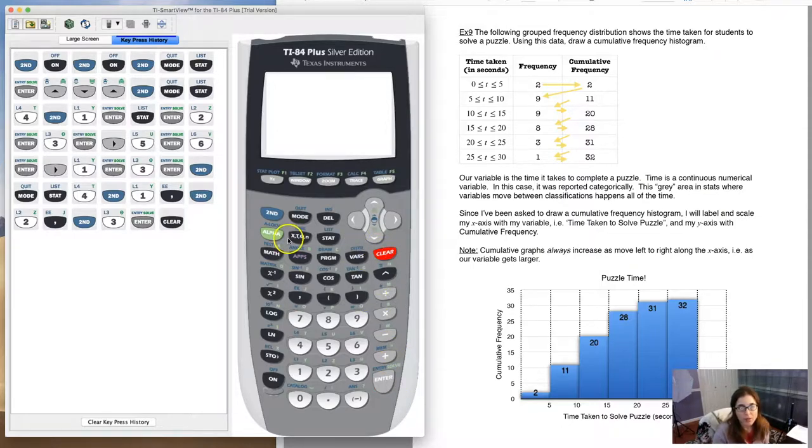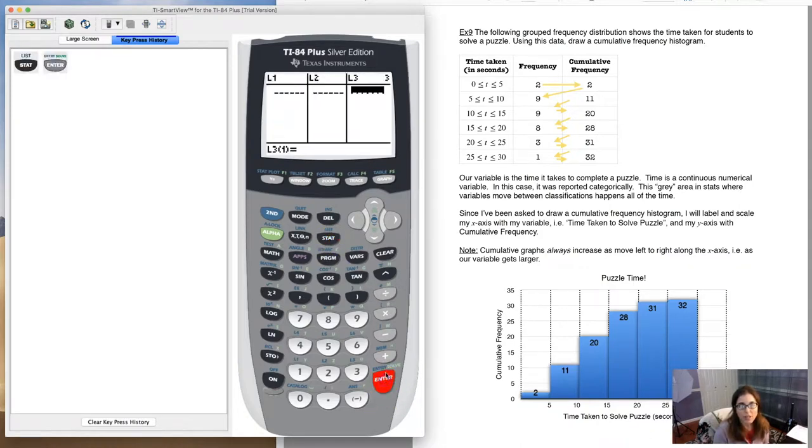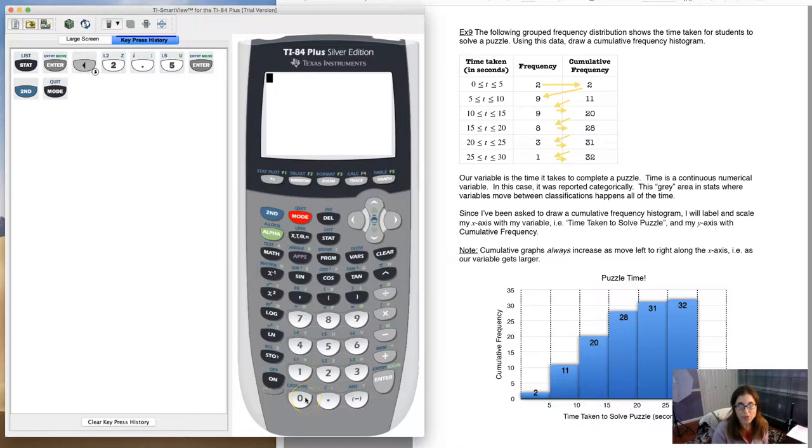Let's get back to this problem. Let's hit stat, let's go in here. Now I want to put data into L1, and the way our data was given to us is we had zero to five, five to 10, 10 to 15, so on and so forth. Your calculator can't take intervals of times. It can only take one number. So what we do in stats, when we have the interval from zero to five, we take the halfway point, the midpoint of that. So which time is halfway between zero and five? Well, the number that's halfway between zero and five is 2.5.